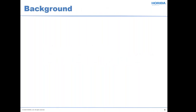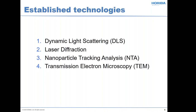Now on to some background comments on nanoparticle analysis. I'll use the term 'nanoparticle' because viruses, with their size range, really fit within nanoparticle sizes. So established technology includes dynamic light scattering, laser diffraction, what are called classical nanoparticle tracking analysis, and transmission electron microscopy. All of those have been around for quite a long time, and they each have their individual strengths and weaknesses.